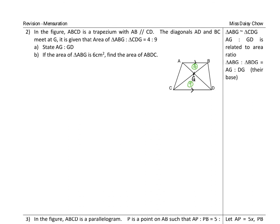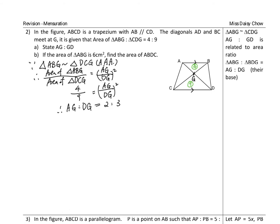Part A, the question is to state AG to GD. This is very simple because these two are similar triangles - for area ratio you can find the length, so you can try to do it. Let's see part B. Part B is if the area of ABG is 6, you have to find ABDC.